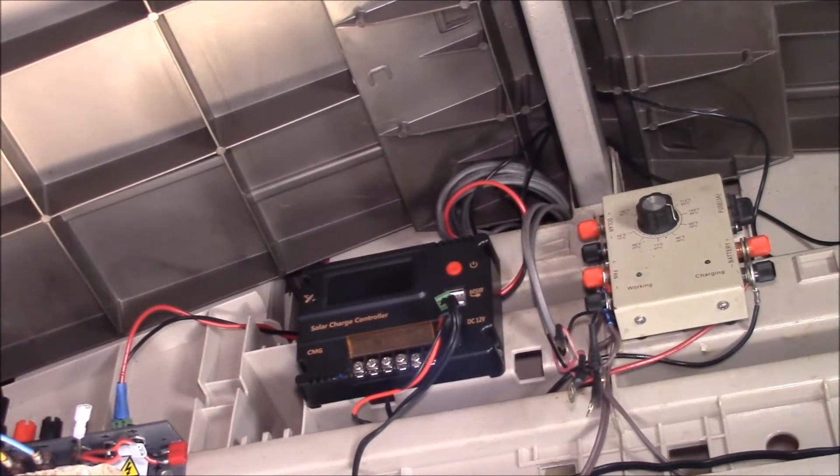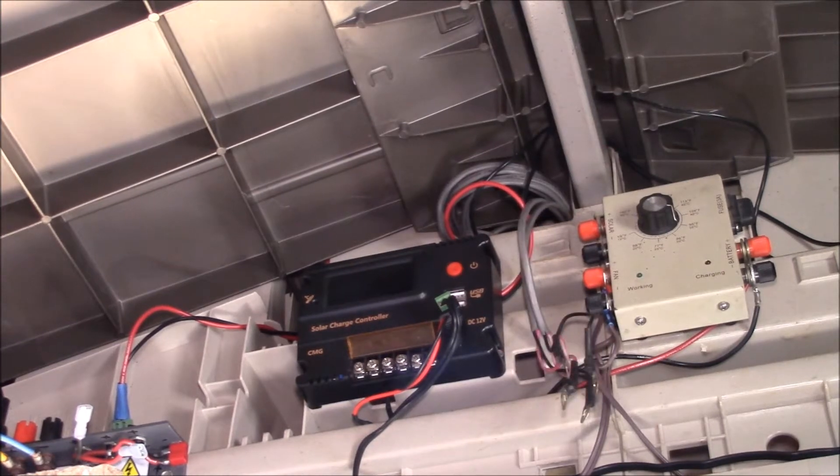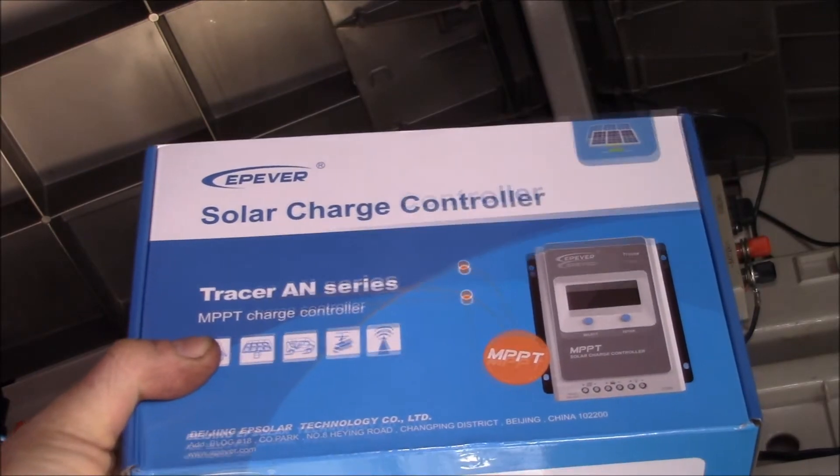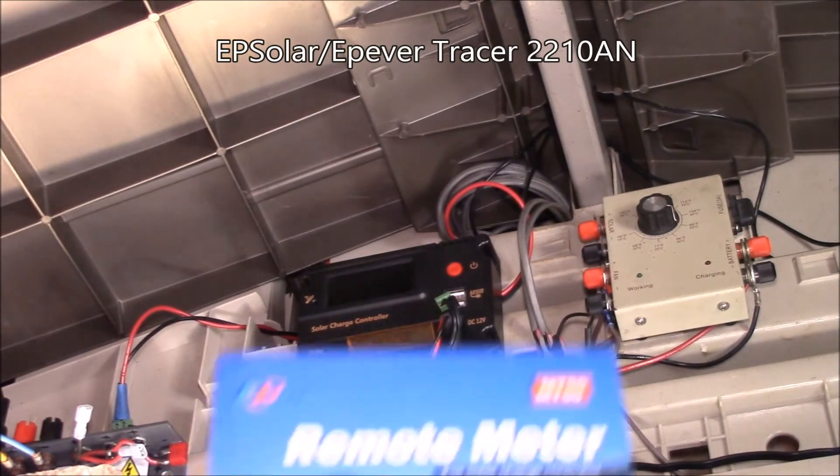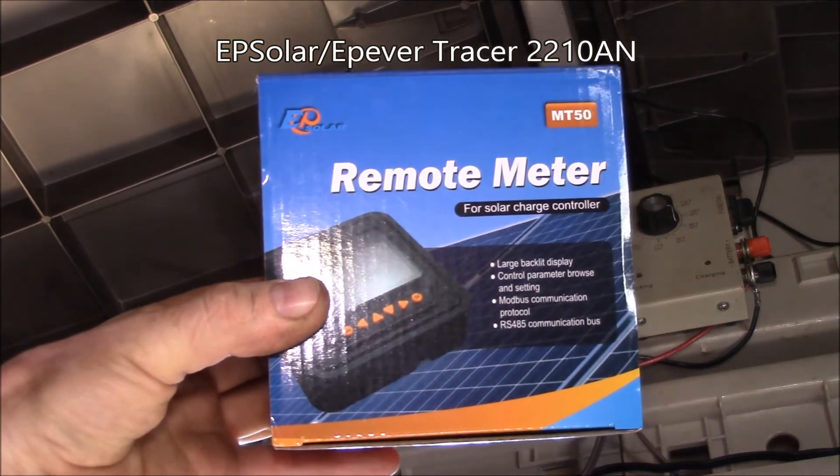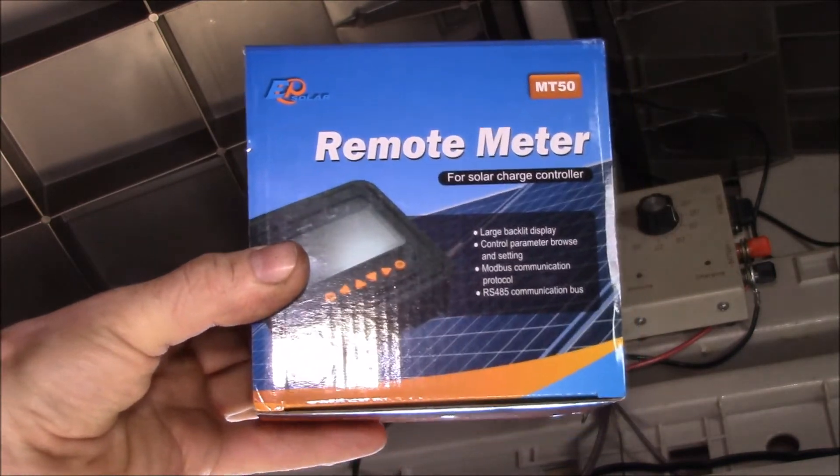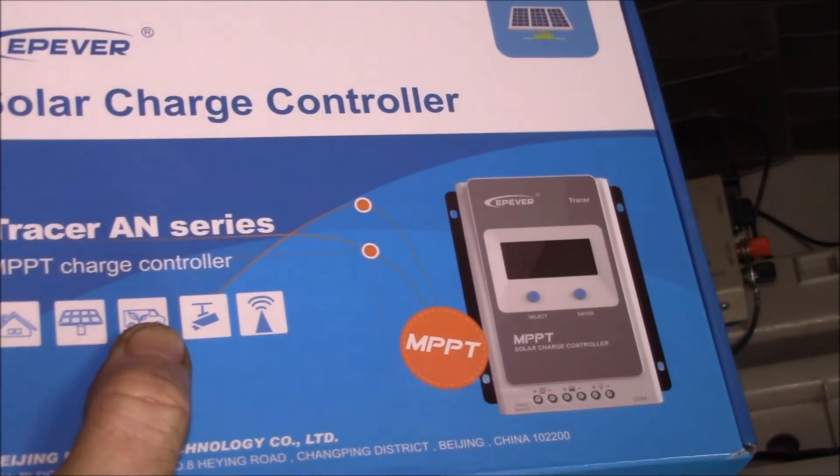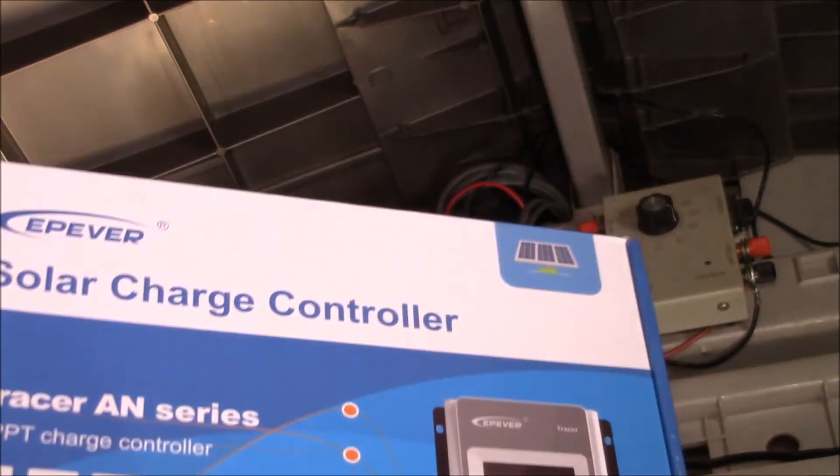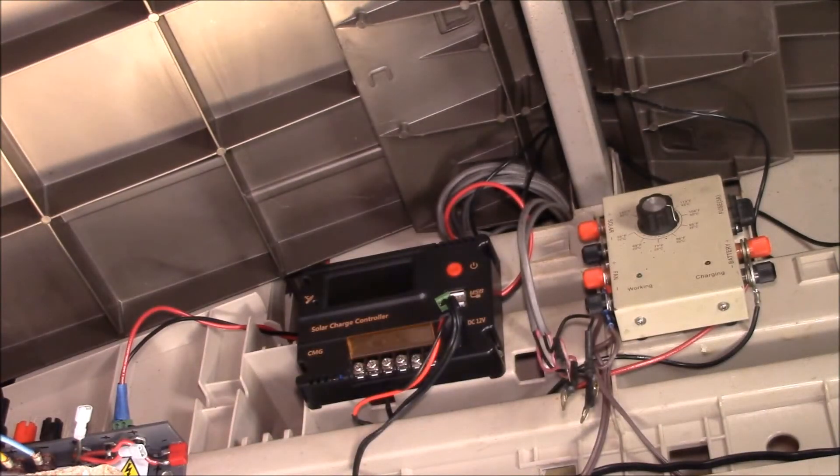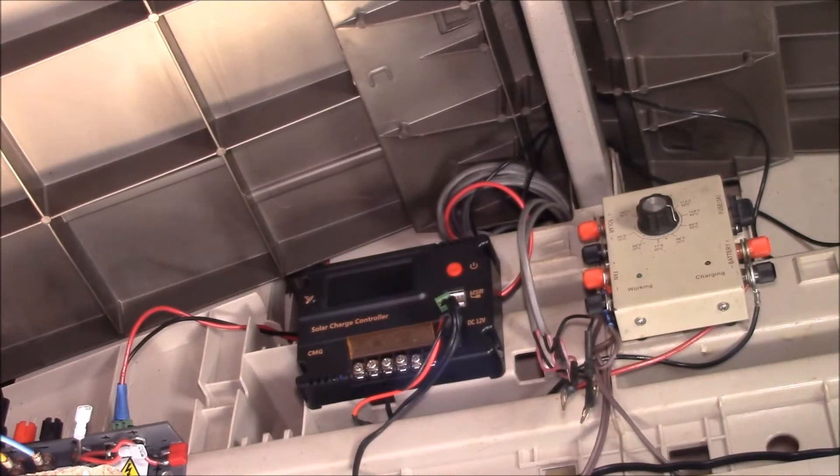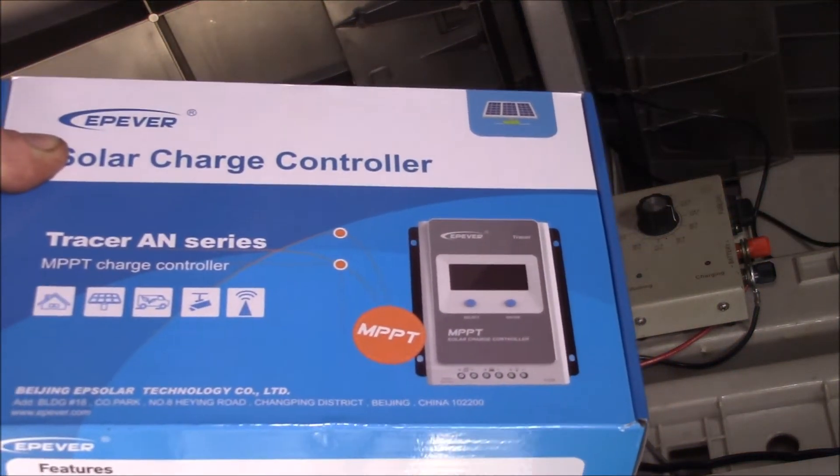So I've decided to finally get a real MPPT charge controller. I picked up one of these, an EPever Tracer AN, and this uses the same remote as my main charge controller on the lithium. So this way I get a spare meter if I need that, or I can use the WiFi interface or any of those things that work there. This is much more than I need - it's 20 amps and the most I'm probably going to see there is maybe 3 amps.